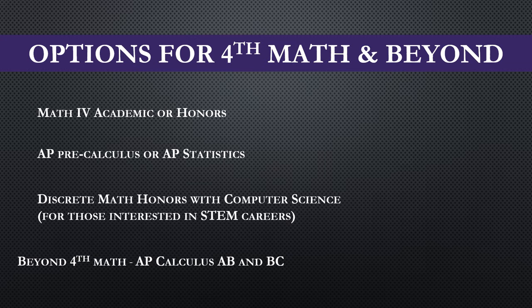There are a few different ways you can go about getting that fourth math credit. After Math 3, Math 4 Academic or Honors is available. Another choice would be to take AP Precalculus or AP Statistics. A third option would be Discrete Math Honors with Computer Science, which is mostly intended for those interested in entering STEM careers after graduation. Beyond your fourth math, if you wish to continue, we have AP Calculus AB and BC.